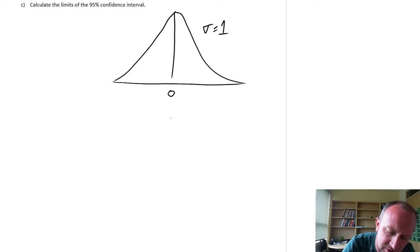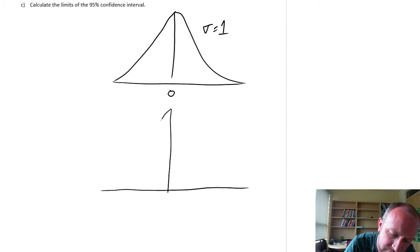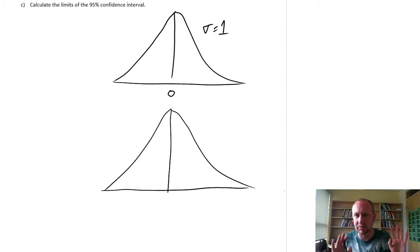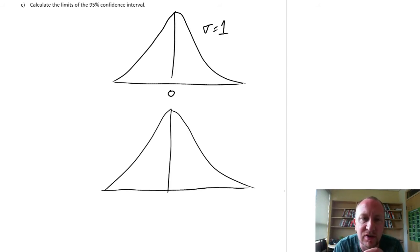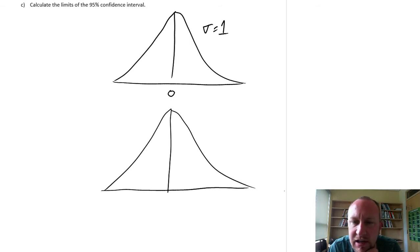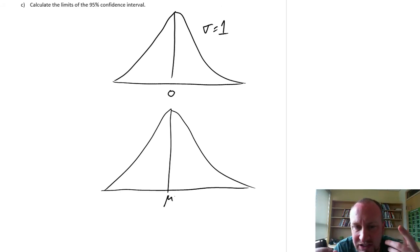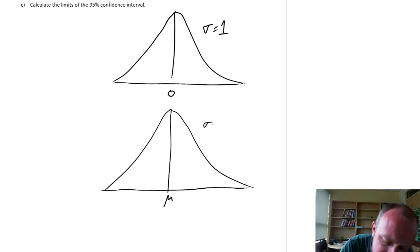I'm going to draw these on top of each other, assuming that everything is normally distributed — that makes life easier at this point in the series. When distributions behave badly, things can get more complicated. So everything is normally distributed, and I have a population mean mu, and a standard error equal to sigma over root n.